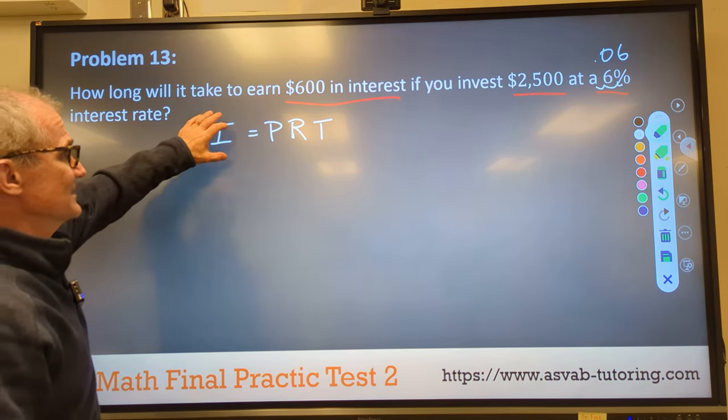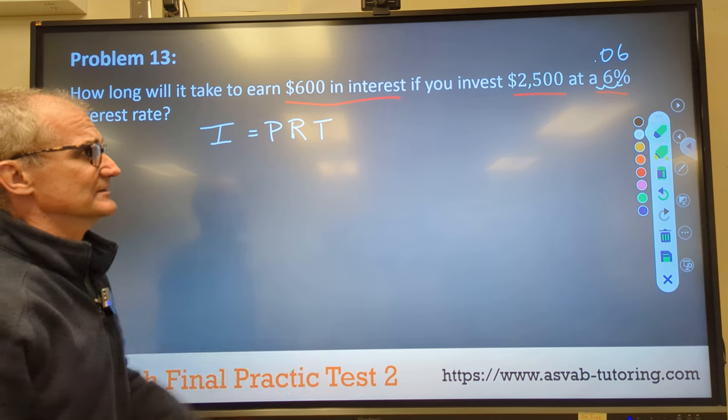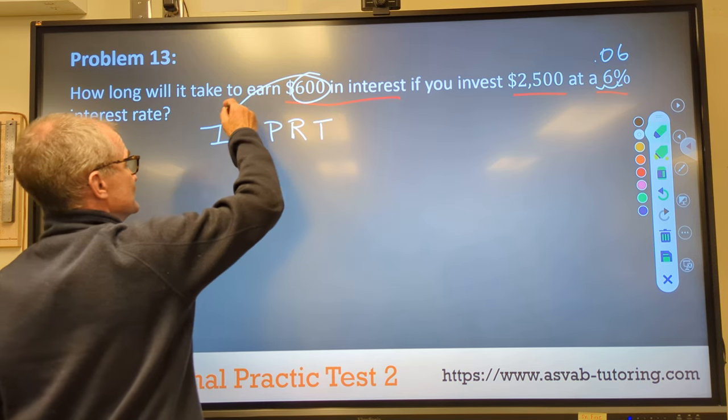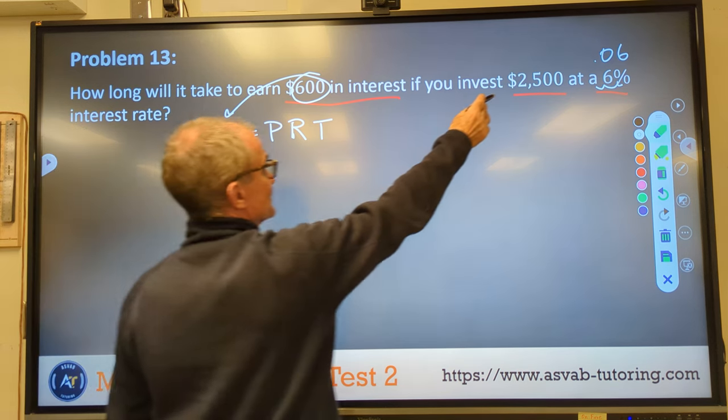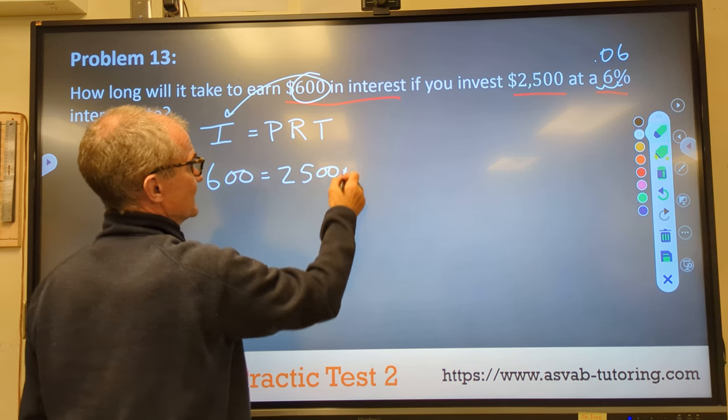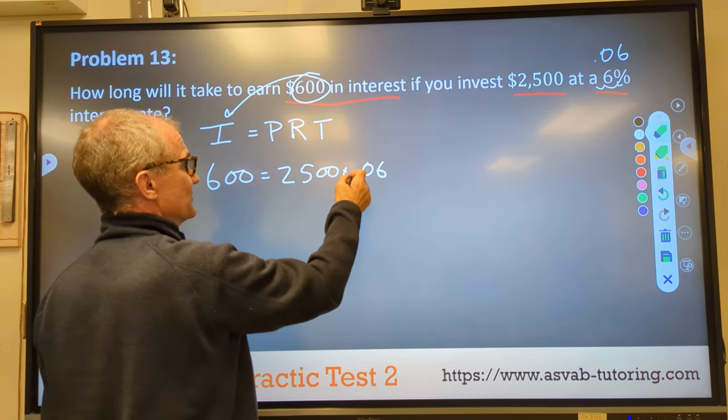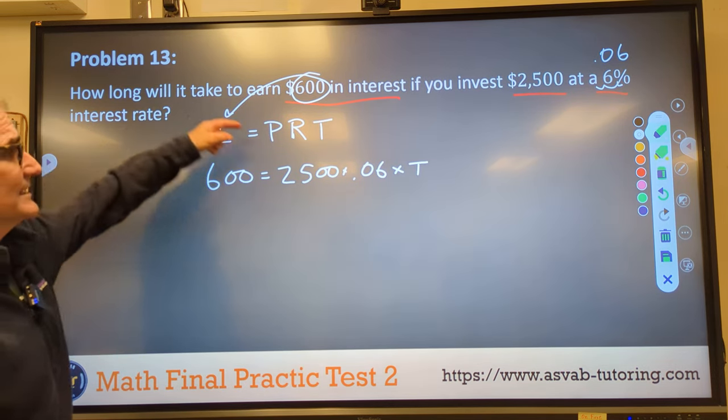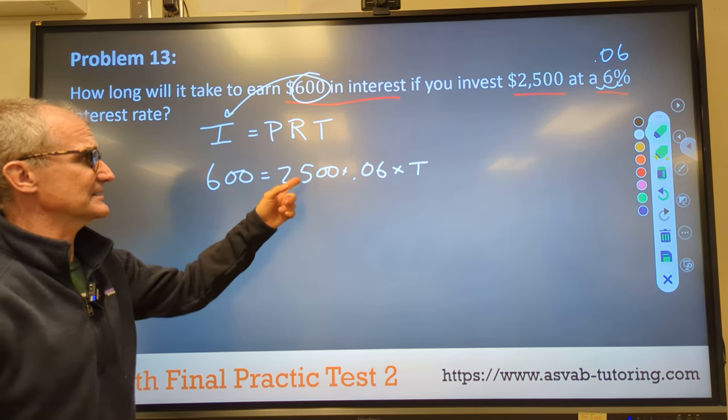So this is your interest. This is how much money you got to start with. This is your rate, and this is number of years if it gets compounded annually. How long will it take to earn $600 in interest? So that $600 goes right in there. How long will it take to make $600 in interest if my principal is $2,500? So I take that $2,500. Then I'm going to multiply it by my rate, 0.06. And then I'm going to multiply it by my time, T. I don't know what that is, and that's the question. How long will it take? So how many years to make $600 in interest at 6% on $2,500?